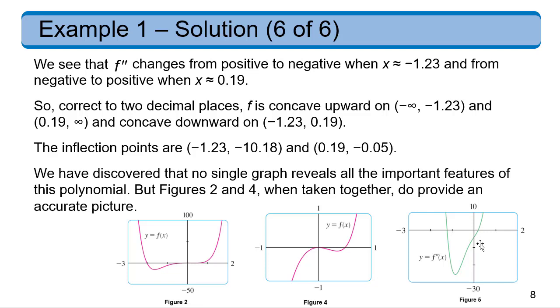So we've narrowed that down, and we can get even closer and figure out that f, the original function, is concave up from negative infinity all the way to negative 1.23. And then again, from 0.19 to infinity, and then it's concave down. This concave downness is going to occur in that inside interval of negative 1.23 to 0.19.